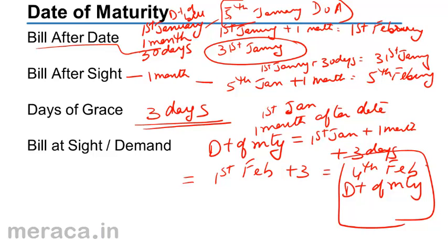This is how the date of maturity is arrived at. It is the date of expiry — whether that is 1 month, 30 days, 90 days, 3 months, or whatever — plus 3 days of grace.